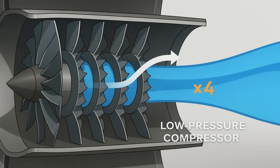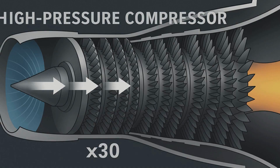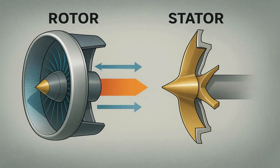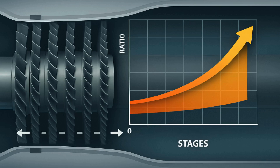The core airflow then travels into the low-pressure compressor, a series of fewer but broader rotor blades. Each spinning rotor pushes air into a narrower passage, raising its pressure by about four times. Stationary stator vanes downstream realign the flow before it hits the next rotor. After a handful of these stages, the high-pressure compressor takes over. It uses many more, much thinner blades packed in closer. The pressure multiplies again until it reaches 20 to 30 times the starting value. This high-pressure air carries a dense packing of oxygen molecules, essential for efficient fuel burn.